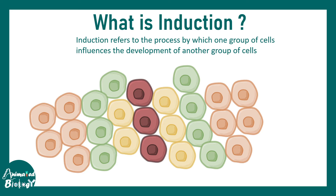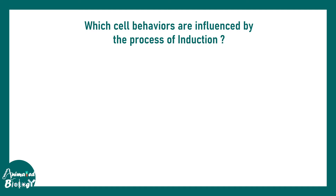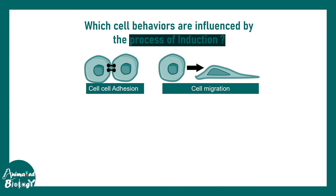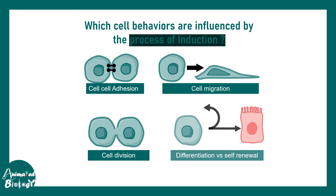In most cases, induction happens via secreted signals and morphogen gradients are involved. Many aspects of cellular behavior can be influenced by the process of induction — for example, cell-cell adhesion, cell migration, cell division, and differentiation to a specific fate. That's why it's so important in the context of development.